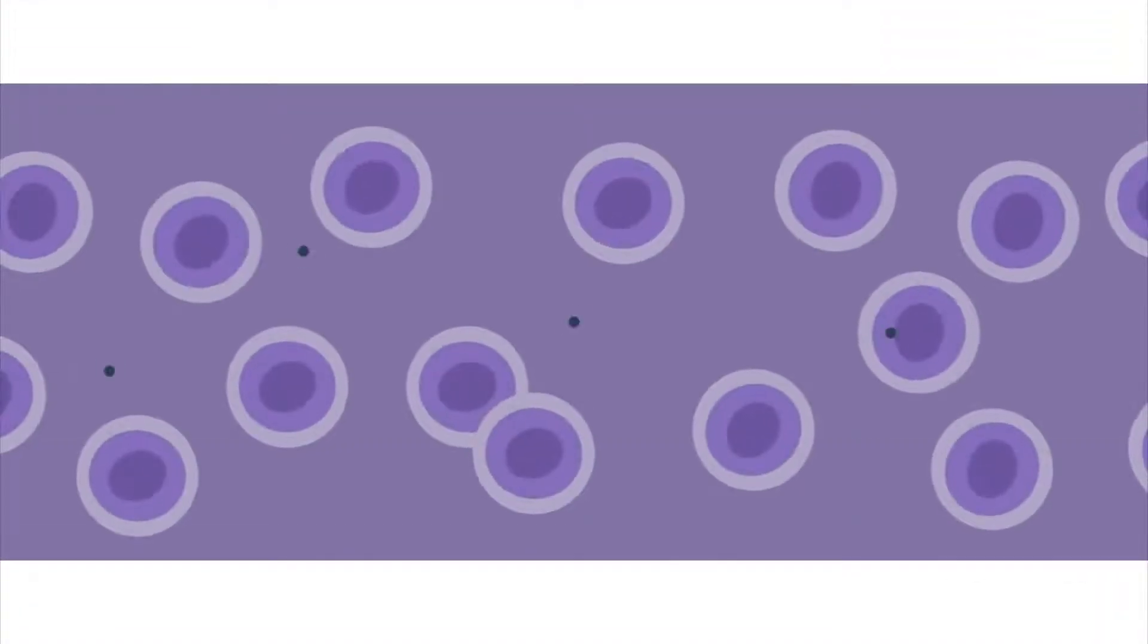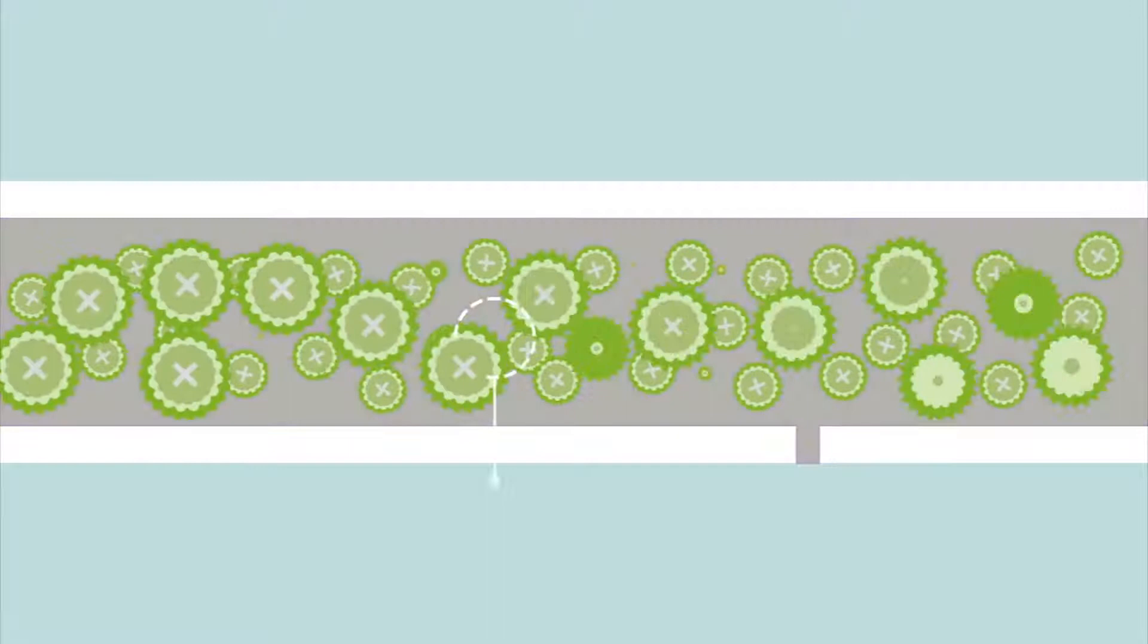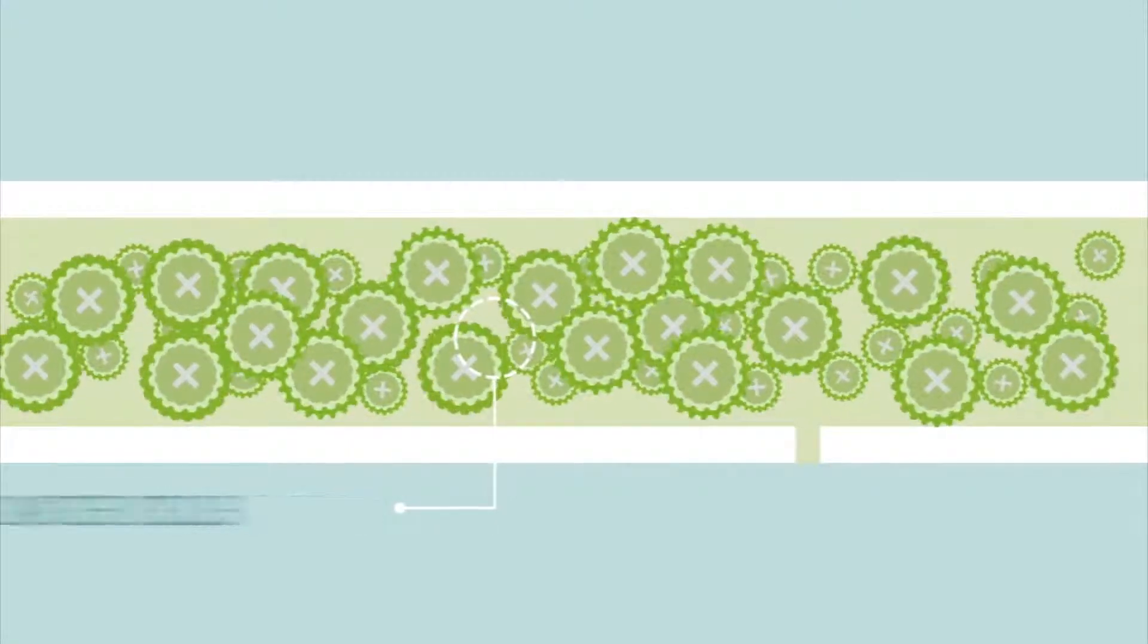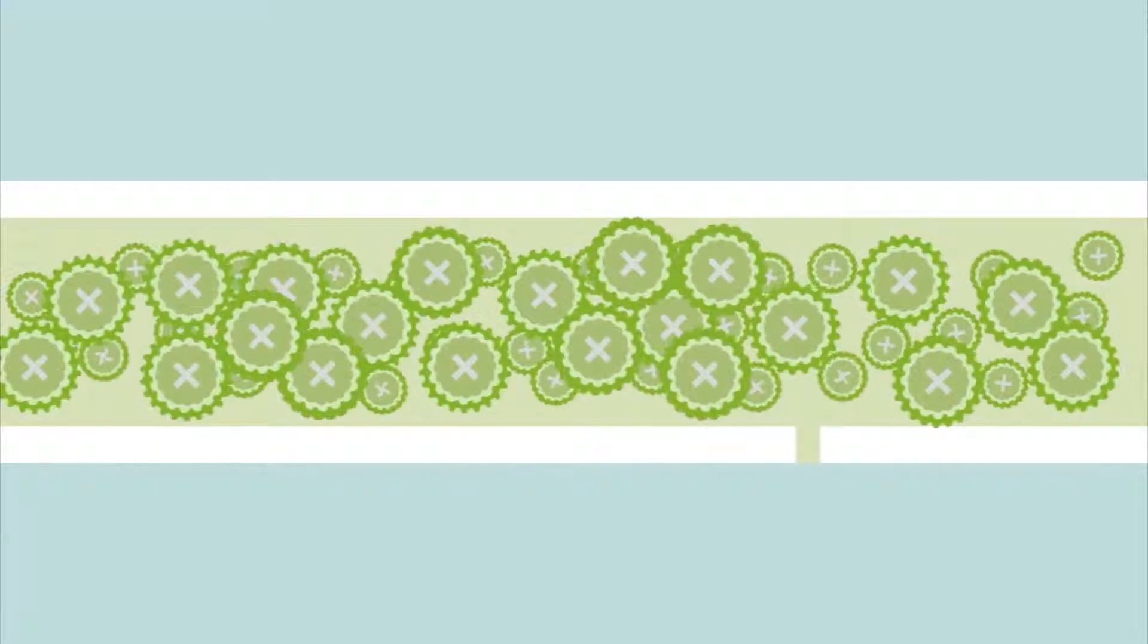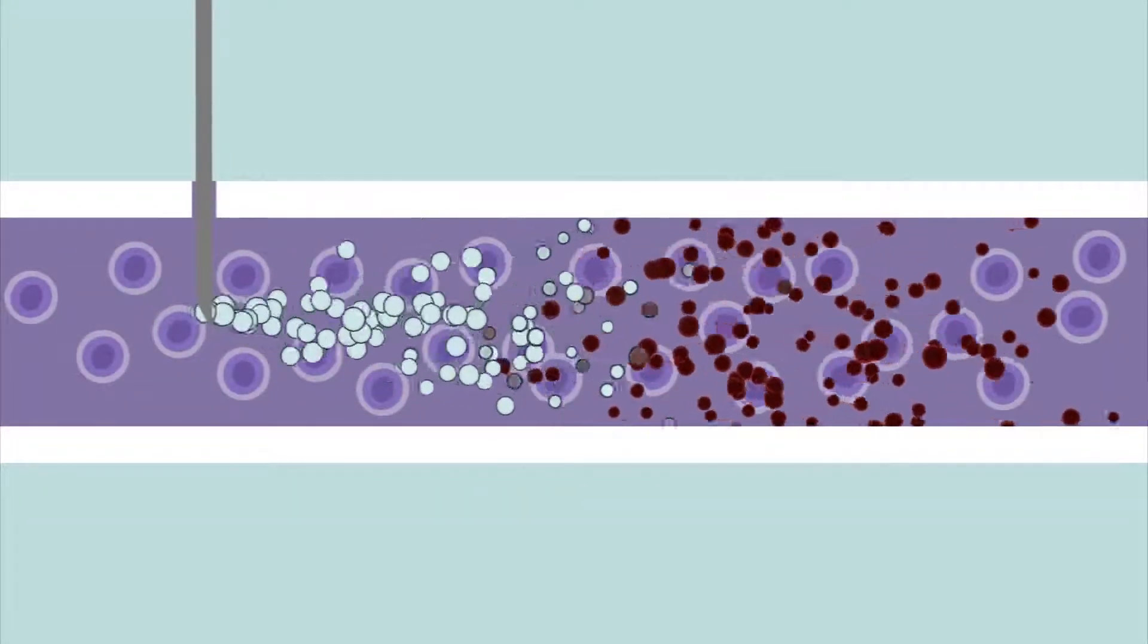Bone marrow is the spongy tissue inside your bones where your blood cells are created. In leukemia, some of the cells inside your bone marrow grow uncontrollably, crowding out the healthy stem cells that form your blood cells. Some leukemia patients can receive a stem cell transplant. These new stem cells will create the blood cells needed by the patient's body.